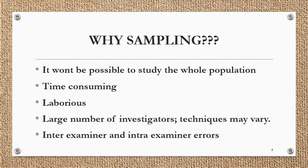Now, why is sampling needed? It is not possible to study the whole population because it is very time-consuming and laborious. We would need a large number of investigators whose techniques may vary, so uniformity will not be there. That means there will be inter-examiner and intra-examiner errors. So to simplify things, we consider sampling as a procedure.